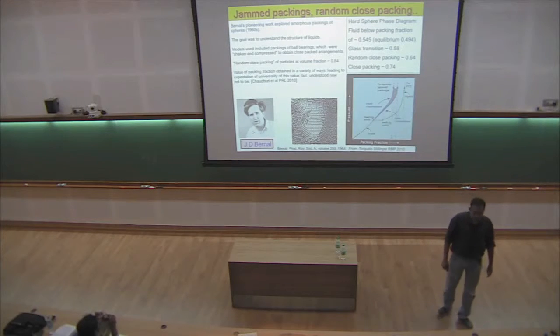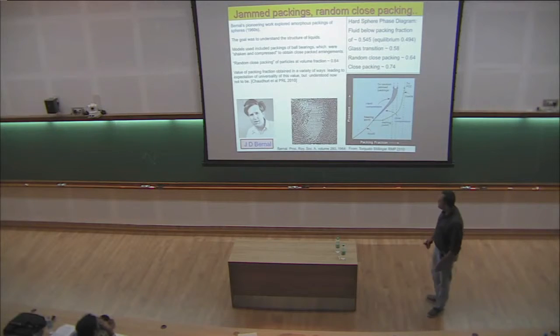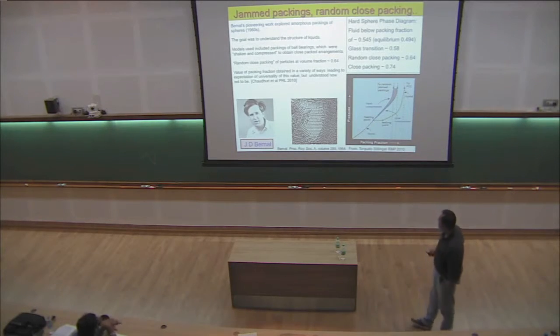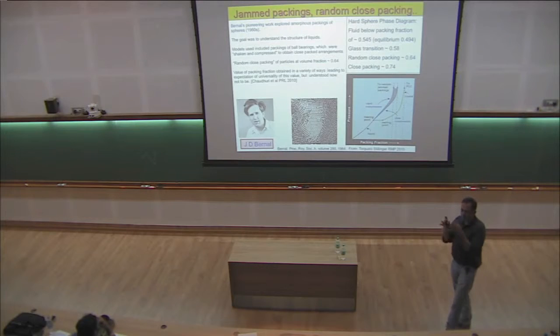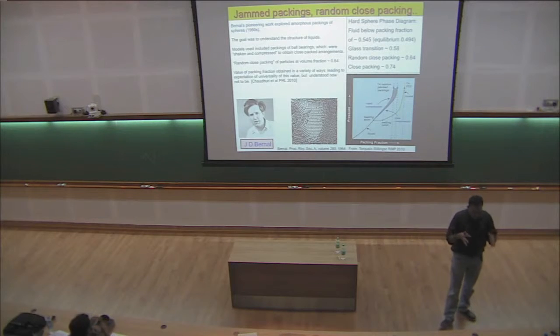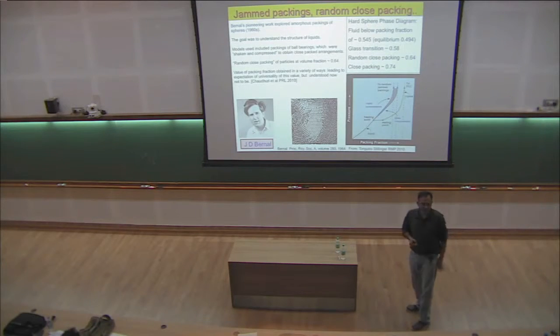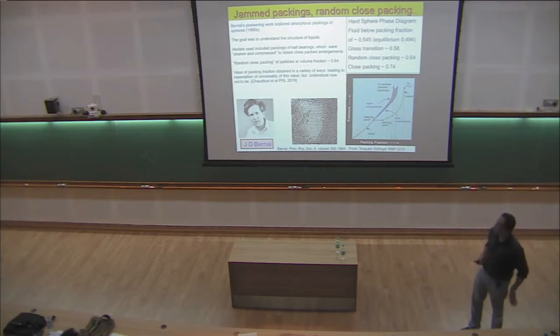This has been found in so many different ways that there's been a notion of universality to this value. But we understand currently that this is not a really universal number. Some work with Pinaki I mentioned here in this context. But on the other hand, a lot of what happens near this jamming point does seem very universal, critical-like and interesting. For the purposes of my talk, the 64% jamming is what happens for a system that is isotropic and devoid of friction. If I say jamming without these adjectives, that's what I'm talking about. I'm going to be contrasting it with the case we have been studying.